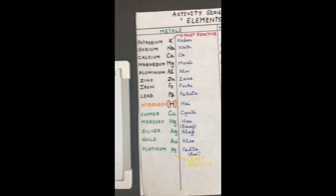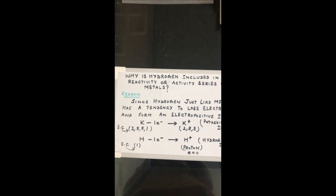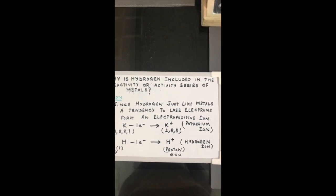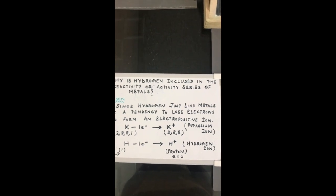Hydrogen is included in the activity series of metals because, just like metals, it has a tendency to lose electrons and form an electropositive ion. Potassium has electronic configuration 2,8,8,1 and can easily lose an electron to form K⁺. Similarly, hydrogen with electronic configuration of 1 can easily lose one electron to form H⁺, which is a proton since it has no electrons and no neutrons. Just like K⁺, hydrogen also forms a positive ion.